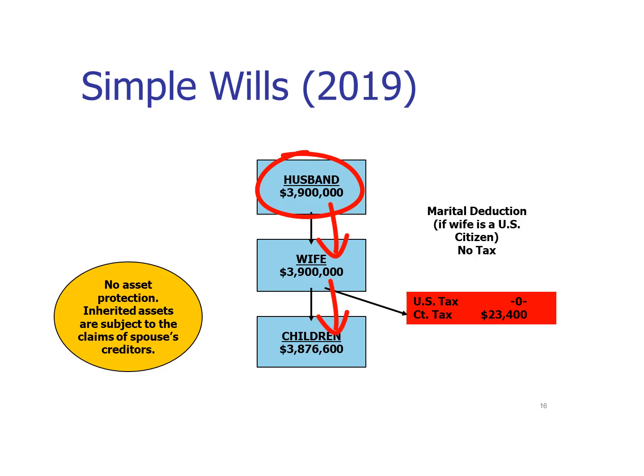Lots of people refer to this as the 'I love you' will, but because of the tax implications, maybe it's less than a complete 'I love you' because there may be a tax cost to doing it this way. The husband gives everything to the wife. The first rule to keep in mind is that transfers between spouses when the receiving spouse is a U.S. citizen are not subject to estate tax — that's the result of the marital deduction.